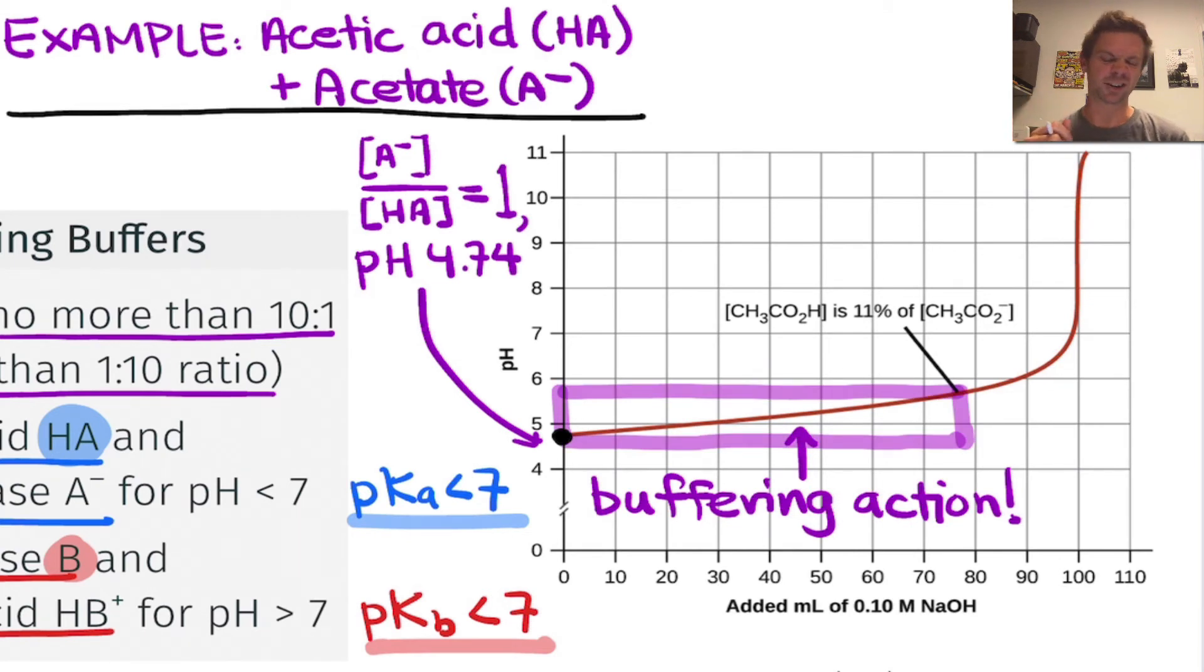It looks roughly linear and relatively flat. The pH isn't changing much as we add that strong base hydroxide. But right about where the acetic acid concentration becomes 11% of the acetate concentration, there's a definite qualitative change in the steepness of this curve. It starts getting much steeper and extremely steep off to the right.